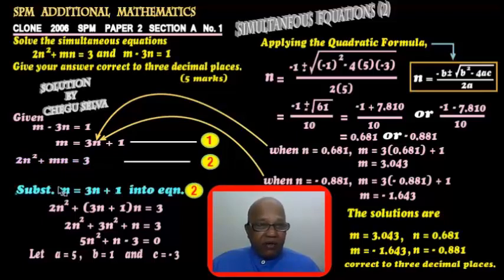Now we substitute m equals 3n plus 1 into equation 2. So this 3n plus 1 goes into the m here. That's what we get here: 2n squared plus bracket 3n plus 1 times n equals 3.